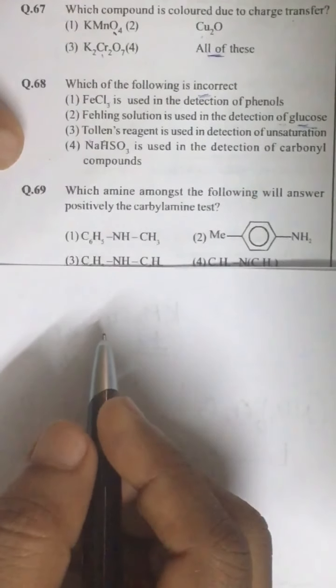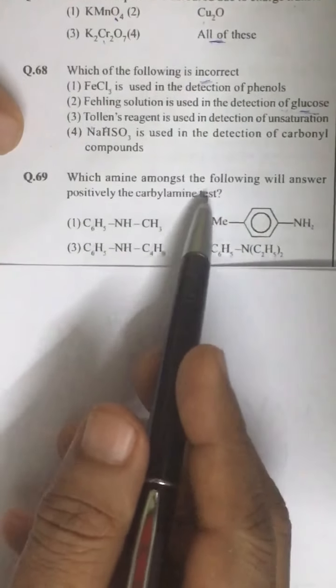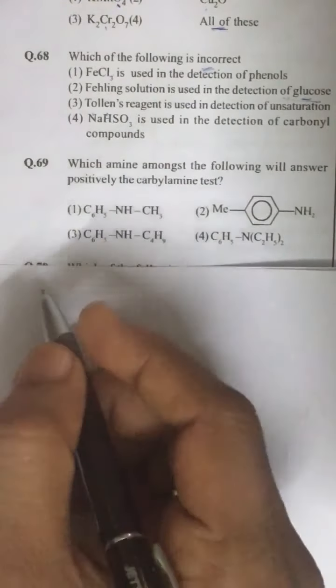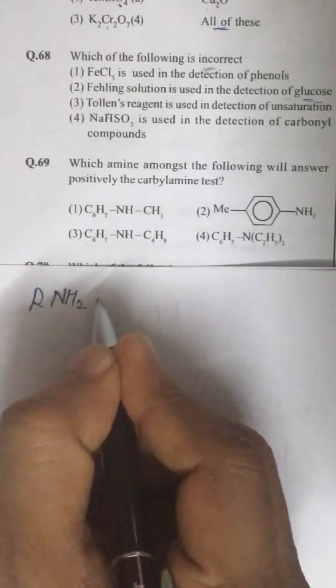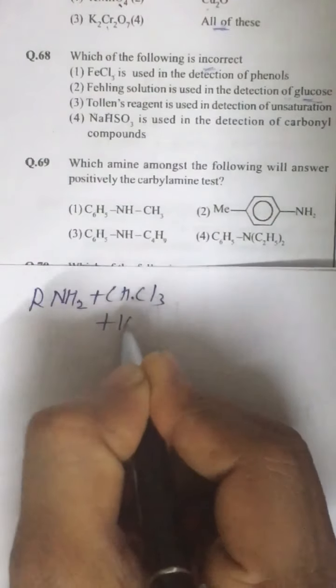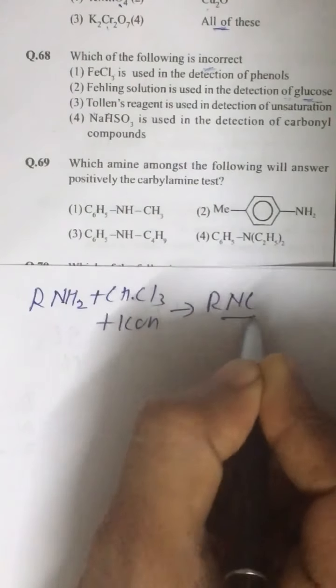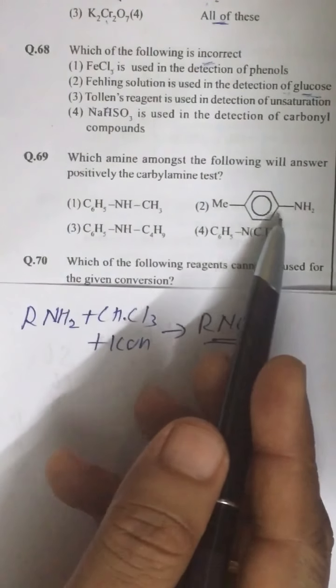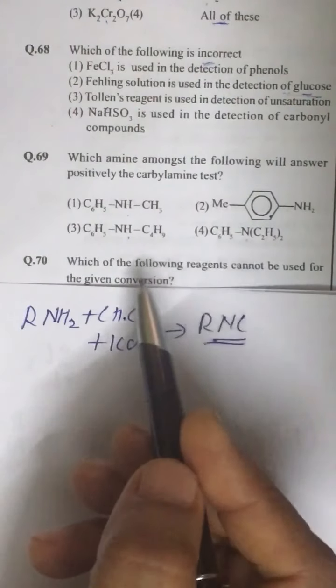They reduce Tollens reagent or Fehling solution etc. Fehling solution is also used to detect glucose because of aldehyde group. If FeCl3 is used in the detection of phenol we get violet coloration of hexaphenoxo ferrate(3). So question number 68, correct answer is third option. Look at question number 69. Which amine amongst the following will answer positive carbylamine test? Carbylamine test is a reaction of primary aliphatic amine or primary aromatic amine with CHCl3 and KOH and the product obtained is RNC. It has a very bad smell. So the correct answer is any primary amine. We have primary aliphatic amine, this one aromatic amine, second option. This is secondary amine, this is secondary amine and this is tertiary amine.